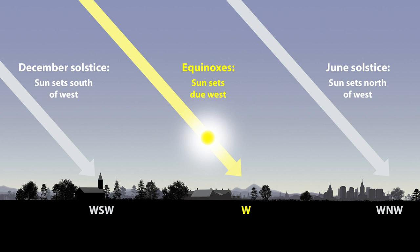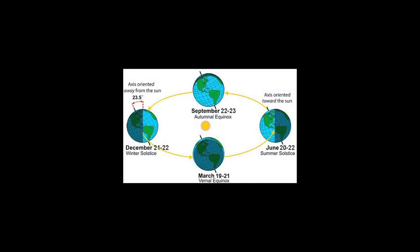Likewise, it's the start of autumn in the Southern Hemisphere. If you've listened to these monthly sky tours for a while, you know that I sidestep this problem by always referring to the March equinox, the June solstice, and so on. You've maybe noticed that the equinoxes and solstices don't happen on the same date each year — the March equinox can fall on the 19th, 20th, or 21st.